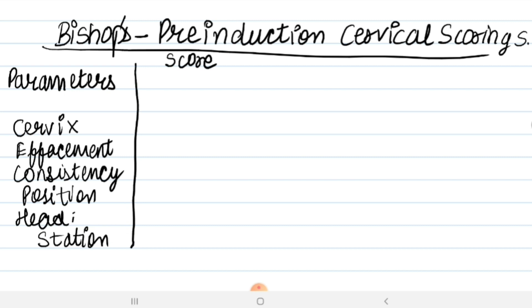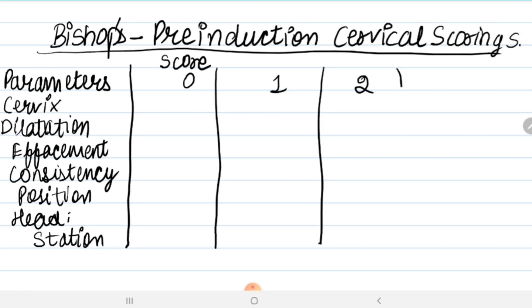So we will score from 0 to 3: 0, 1, 2, and 3. When dilatation of cervix is 0, then...